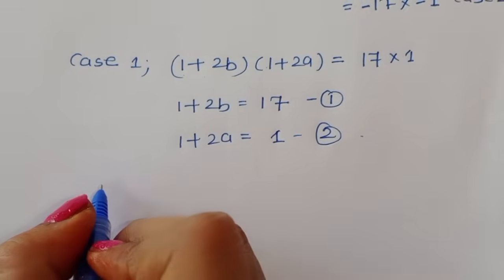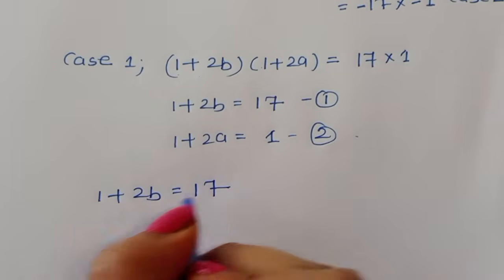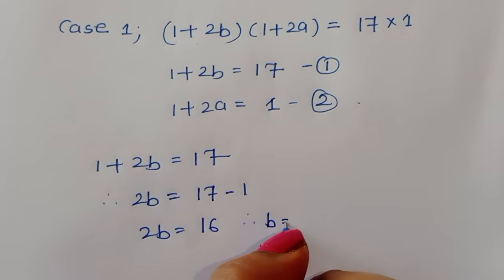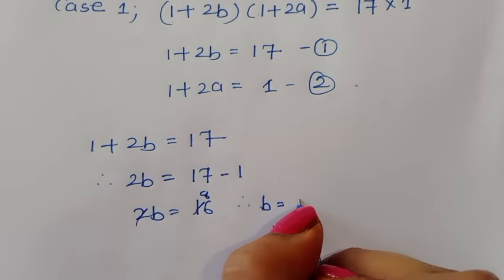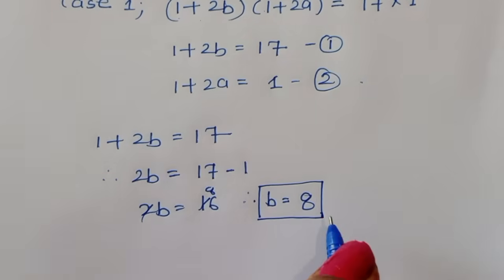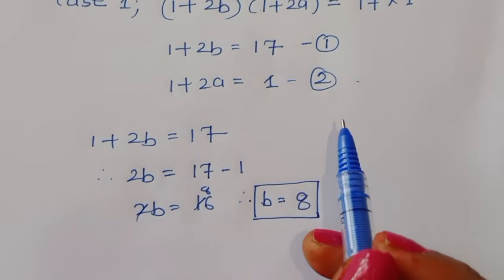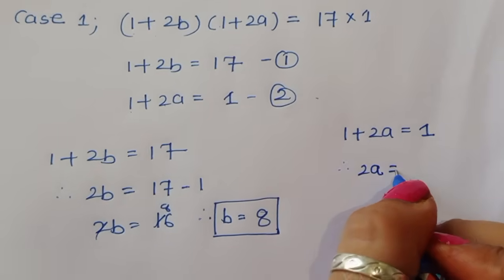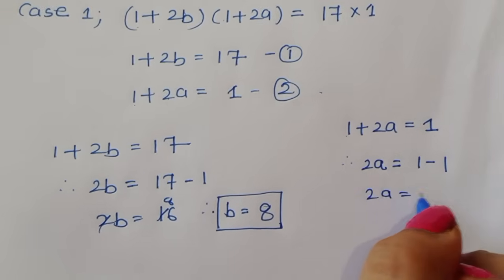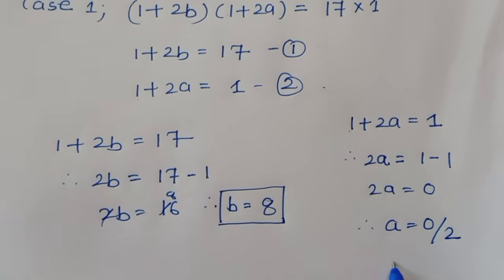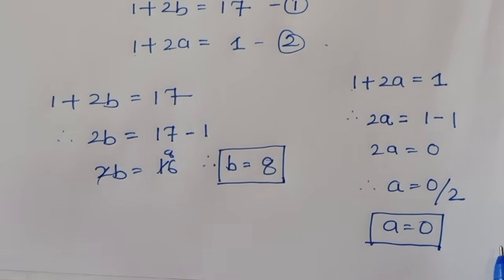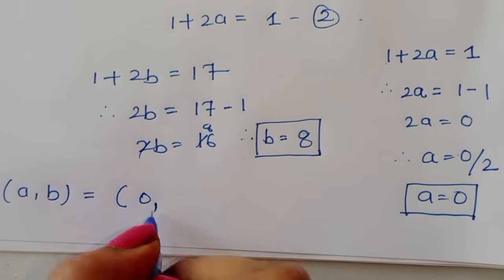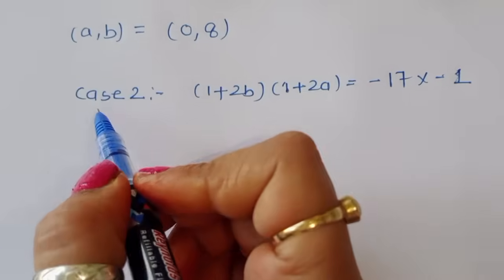From equation 1: 1 + 2b = 17, therefore 2b = 16, therefore b = 8. From equation 2: 1 + 2a = 1, therefore 2a = 0, therefore a = 0. So from Case 1, a = 0 and b = 8.